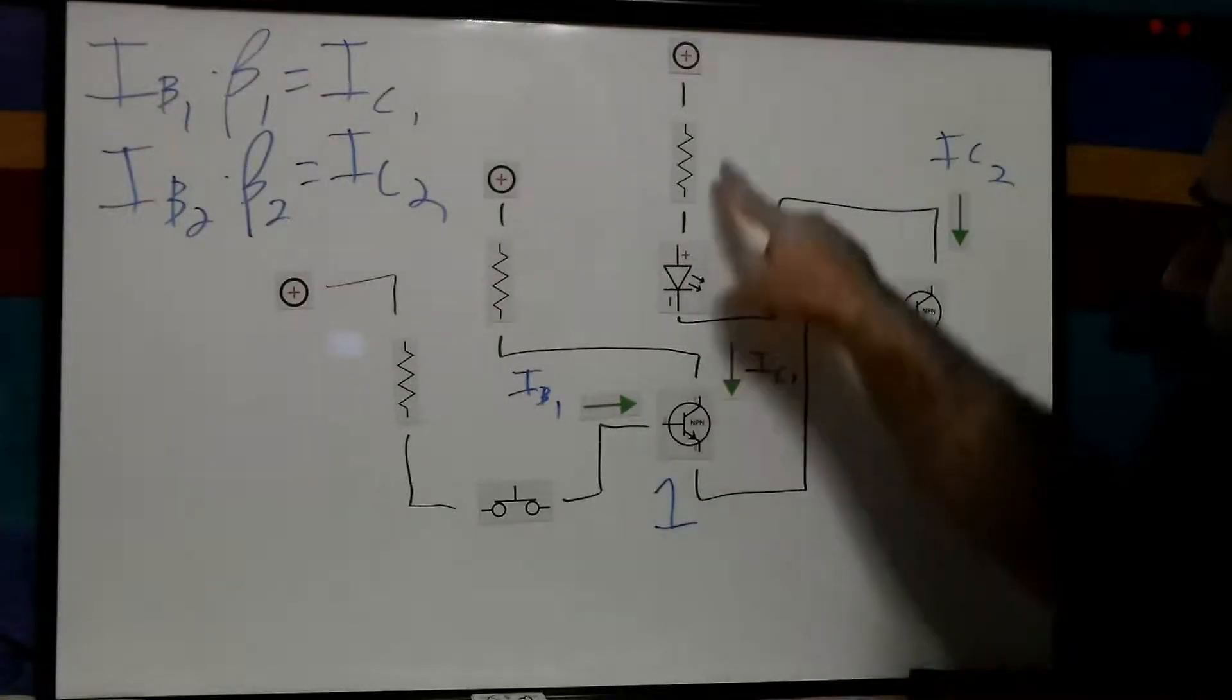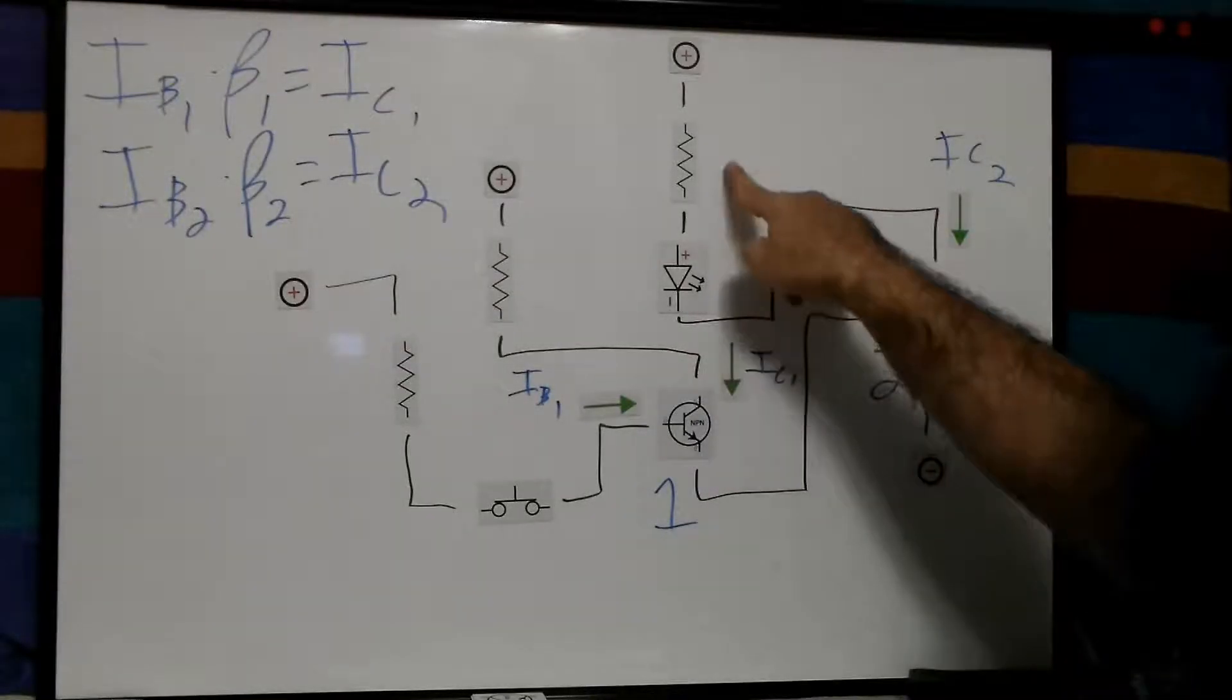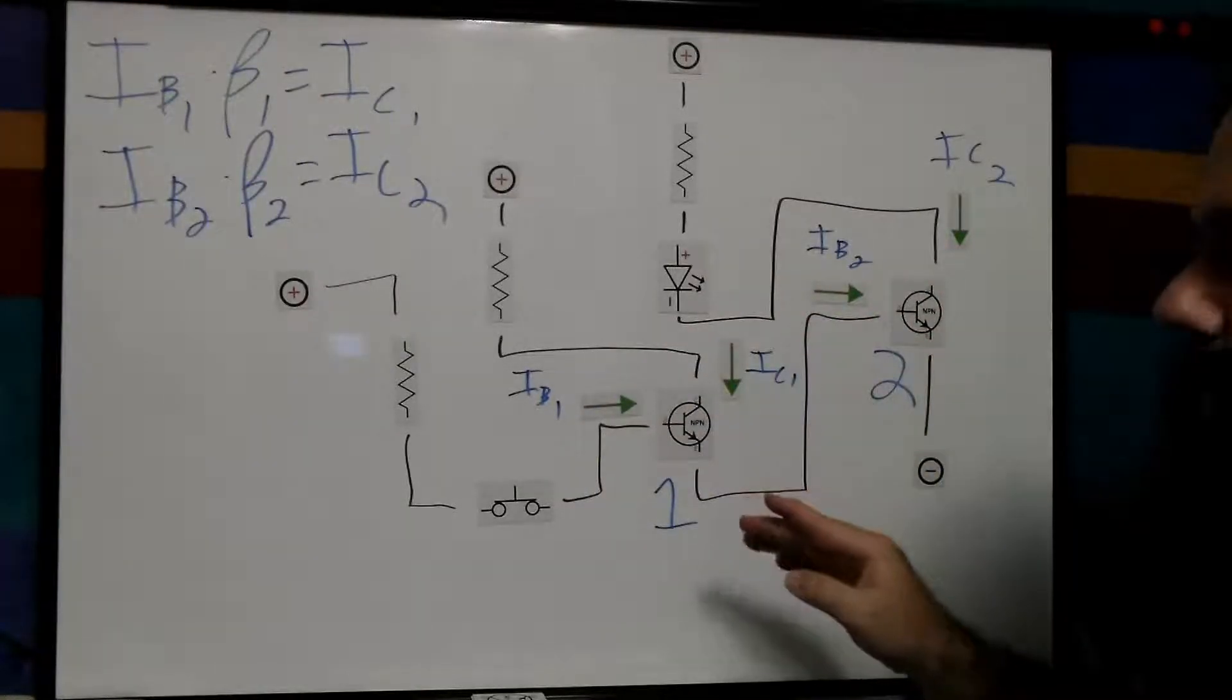Current base 2 times beta 2 equals current collector 2. Current through collector 2 is our load current. Now, this is only the maximum.